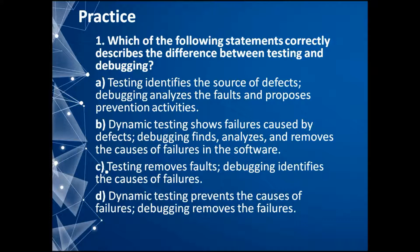Practice question: which of the following statements correctly describes the difference between testing and debugging? Option A: testing identifies the source of defects, debugging analyzes the faults and processes prevention activities. This is not true because testing doesn't identify the source of defects. Option B: dynamic testing shows failures caused by defects, debugging finds, analyzes, and removes the causes of failures in the software.